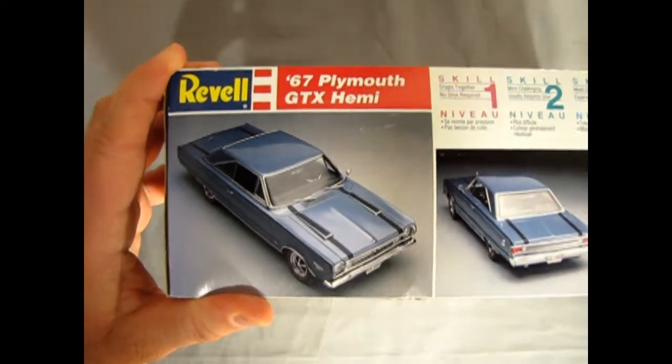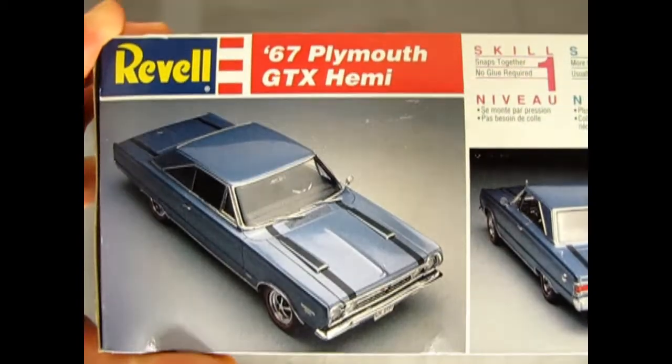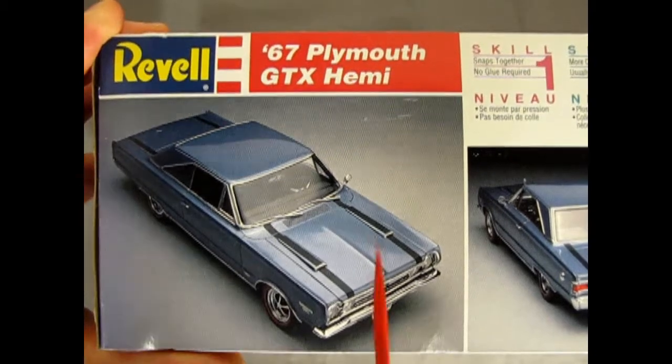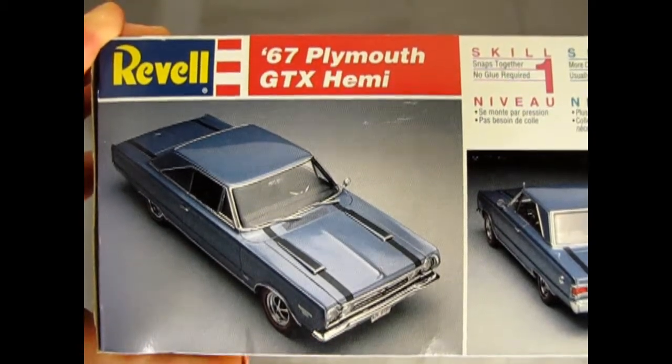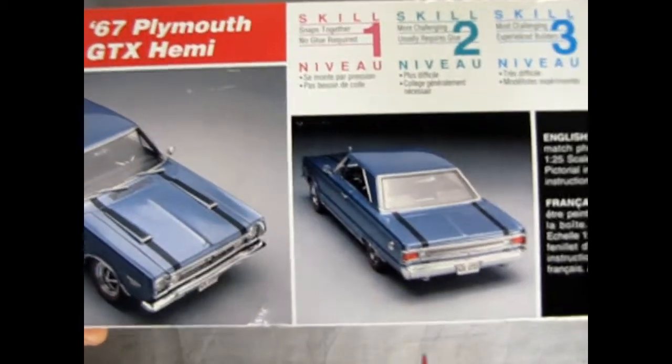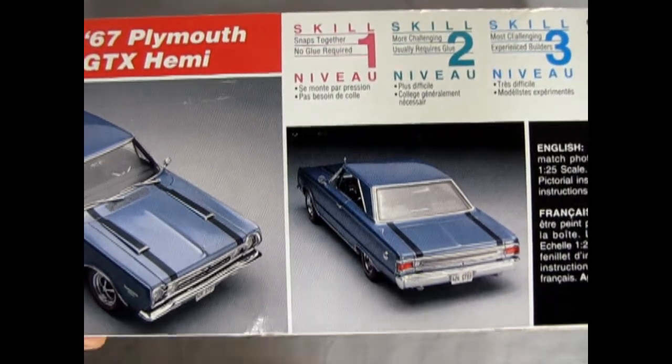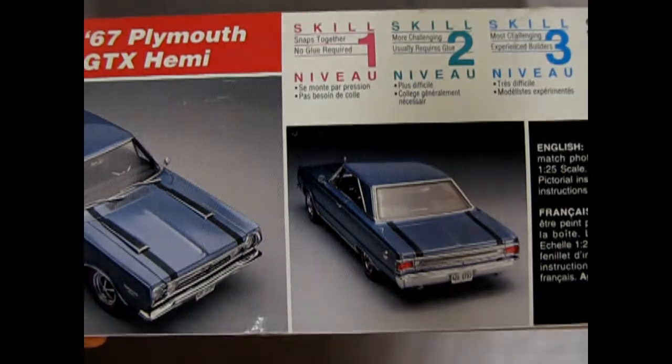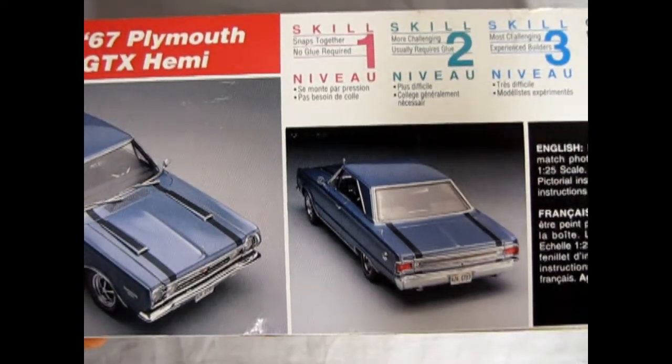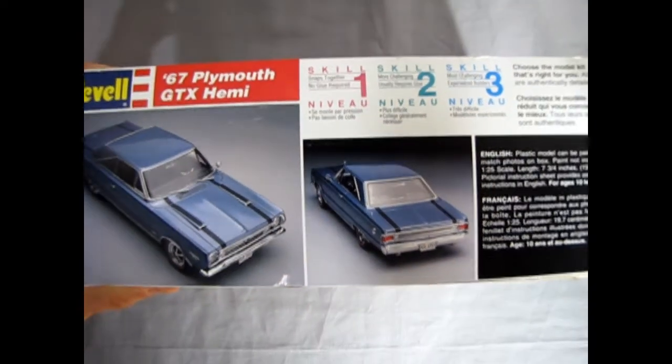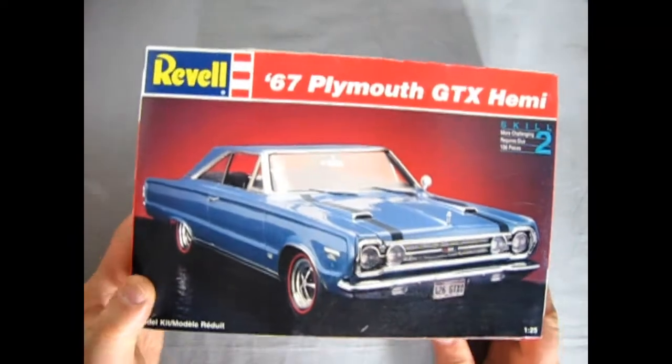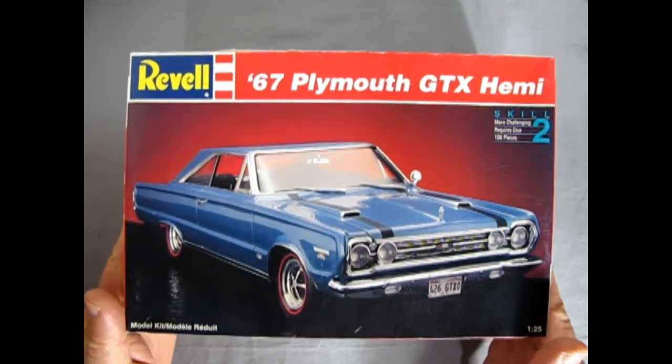Now here we get the top down photograph, front three quarters. And as we move this over, we get the rear of the car. You can see it's quite a nice model. Skill level 2, I believe. So glue and paint required. And now let's just open the lid and see what's inside.